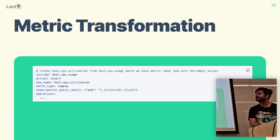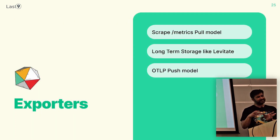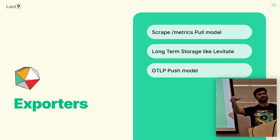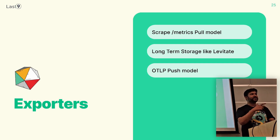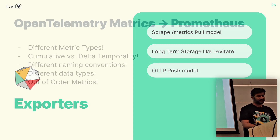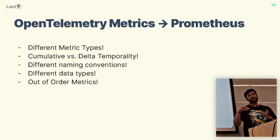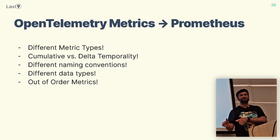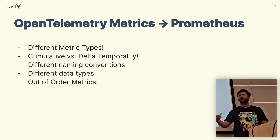The advantage of doing this calculation at the processor layer is that your query time gets reduced massively, because otherwise you'd do that calculation while querying the data. Here it happens before sending data to the storage layer. You can extract fields, apply regex, and create new labels from your metric data. For exporters, there are multiple options: a scrape endpoint where Prometheus-compatible storage can pull from, a remote-write option to push data, and the experimental OTLP push support recently added in Prometheus.